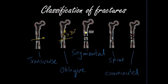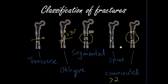A segmental fracture is where you've got a piece of bone isolated between two fracture lines. This can also be considered a comminuted fracture. A comminuted fracture is one which has greater than two pieces — so three or more fragments. Both of these examples are comminuted fractures, but the segmental fracture is specifically one where you can see a clear segment that has been isolated from the bone.